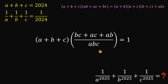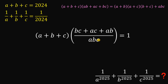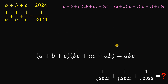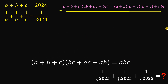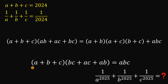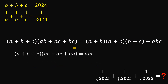Now we have the same denominator ABC, so we can combine them. Given this equation, we multiply both sides by ABC to eliminate the denominator, giving us: A plus B plus C, multiplied by BC plus AC plus AB, equals ABC. Now, notice this expression on the left is simply the left-hand side of our identity, and we know it equals ABC.